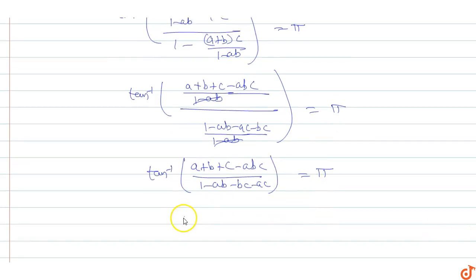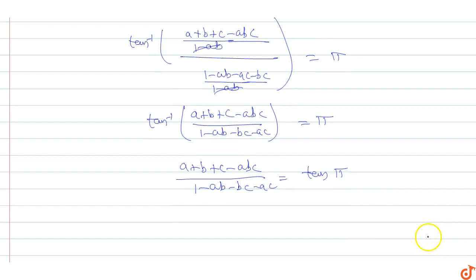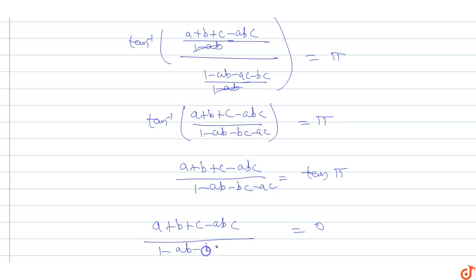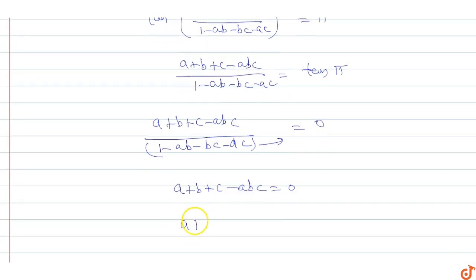So (a + b + c minus abc) upon (1 minus ab minus bc minus ac) equals tan(pi), which equals zero. Therefore (a + b + c minus abc) upon (1 minus ab minus bc minus ac) equals zero, which means a + b + c minus abc equals zero.